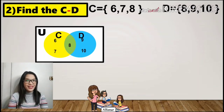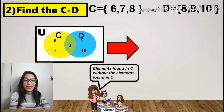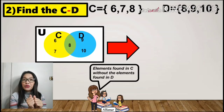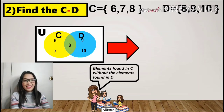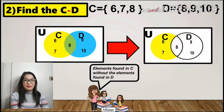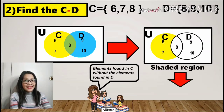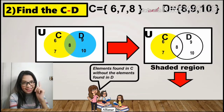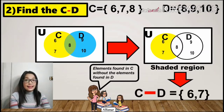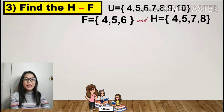To get the difference, this will be the elements in C without the elements in D. So we remove the elements in D that are also in C. The shaded region will be the difference of sets. The elements inside the shaded region are 6 and 7, which is the difference between C and D.